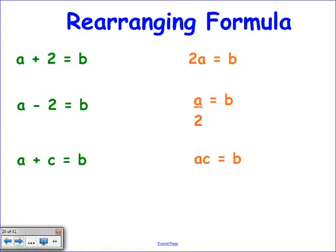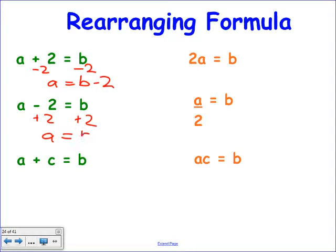Let me show you basic rearranging. I've got A plus 2 equals B and I want to make A the subject. Take away 2 from both sides: A equals B minus 2. Here's A minus 2 equals B — to get A on its own, add 2 on each side: A equals B plus 2. The fact that there's no number on this side is irrelevant — you've got B and you add or subtract accordingly.